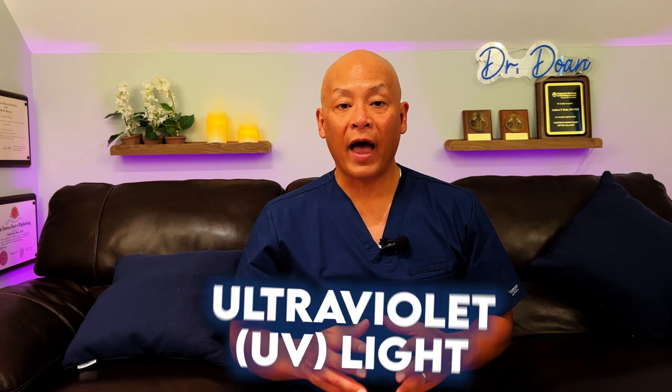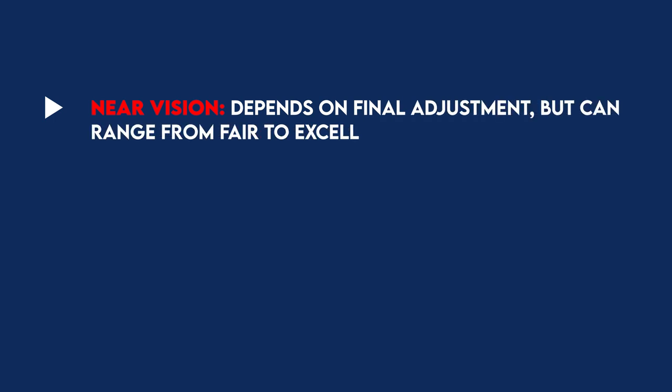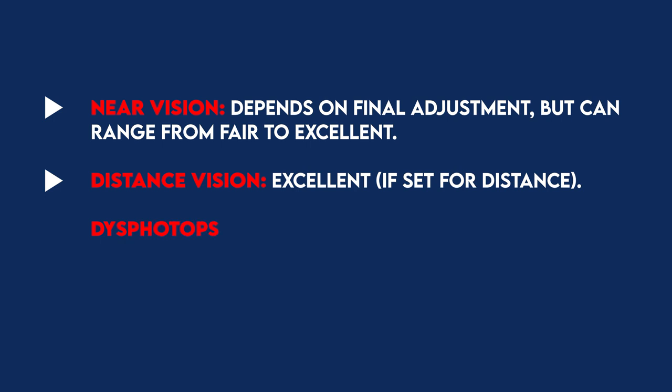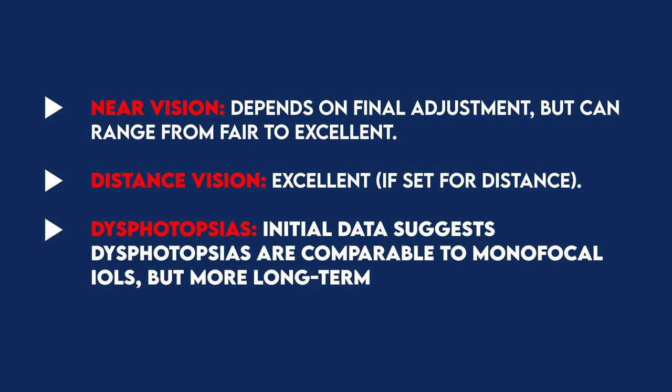The light adjustable lens is made of a special photosensitive material that changes the shape and power of your implanted lens. UV light is used after surgery to optimize your vision. The light delivery device non-invasively delivers UV light to precisely reshape your lens based on the visual correction needed to target your custom prescription. Near vision: depends on the final adjustment but can range from fair to excellent. Distance vision: excellent if set for distance. Dysphotopsias: initial data suggests rates are comparable to monofocal IOLs.